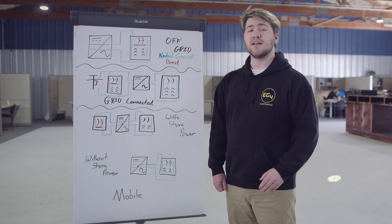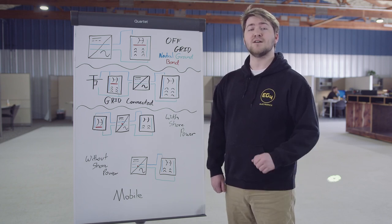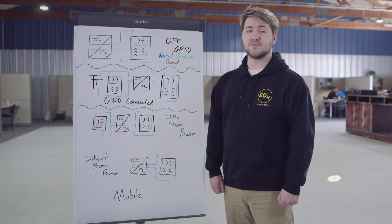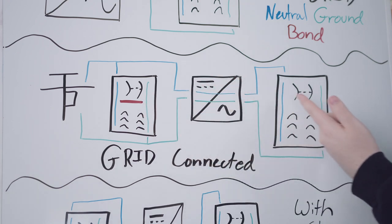EG4 has removed this bond screw and configured the inverter's relay using software to always pass through the neutral to match U.S. industry standards for stationary systems. You will thus always have the grid's neutral bond pass through and have the bond on the output panel as well.